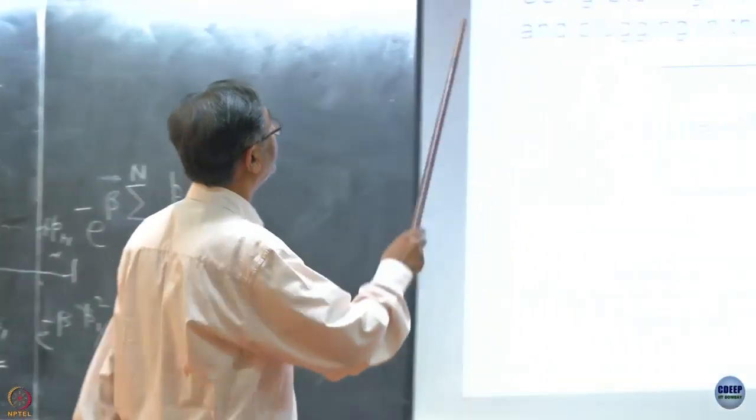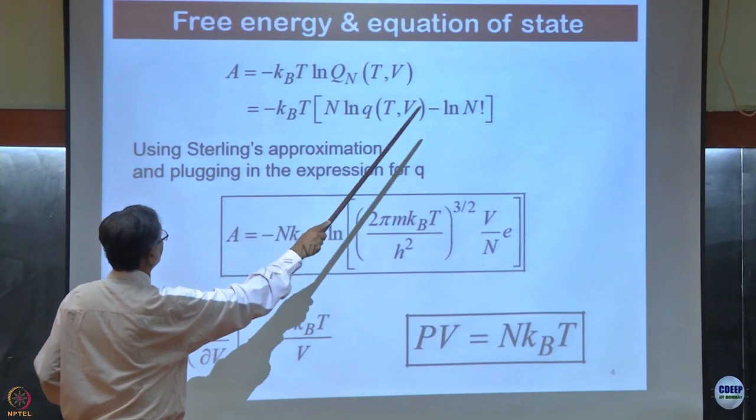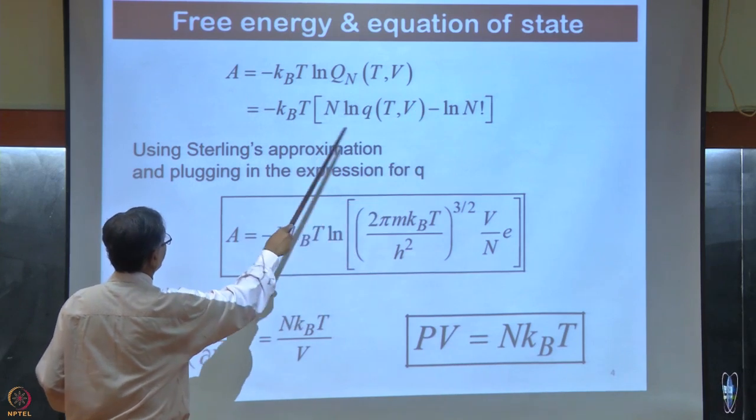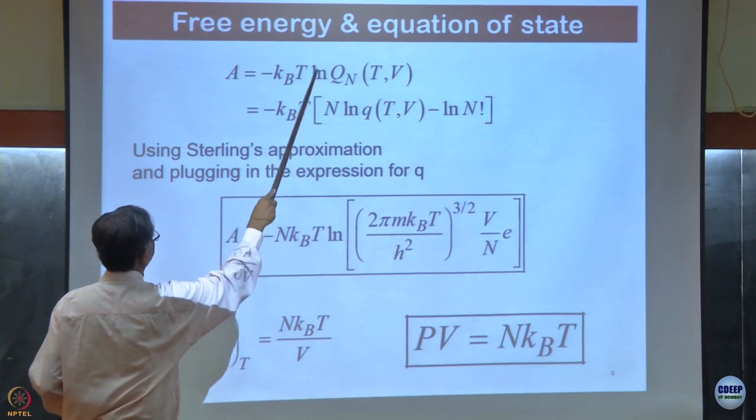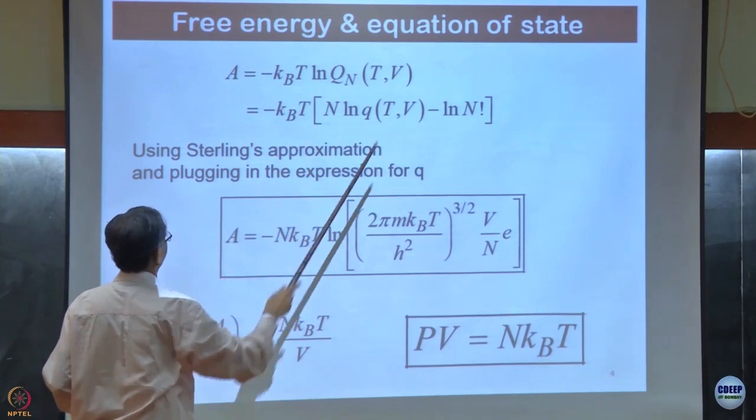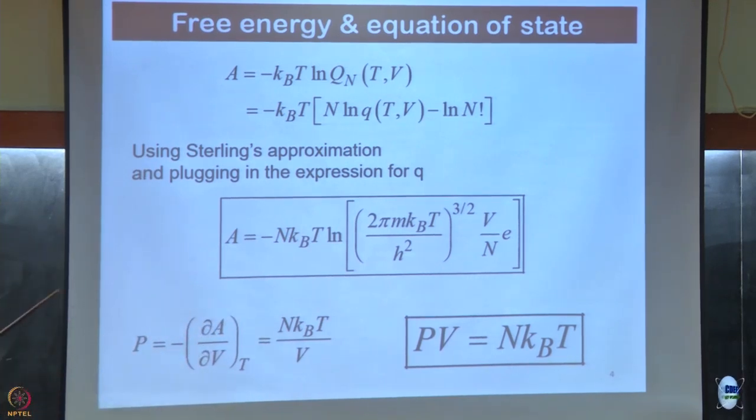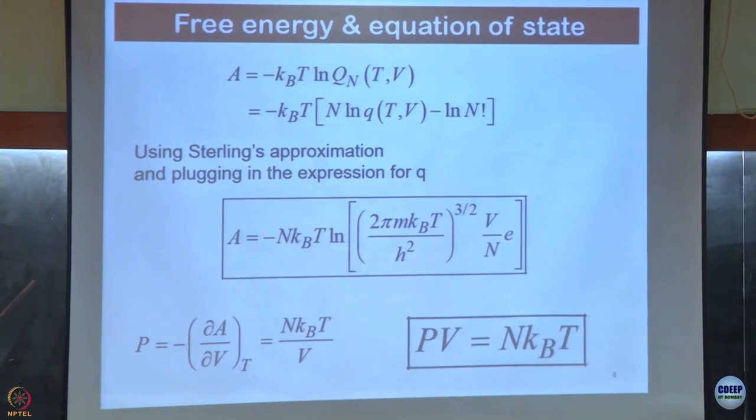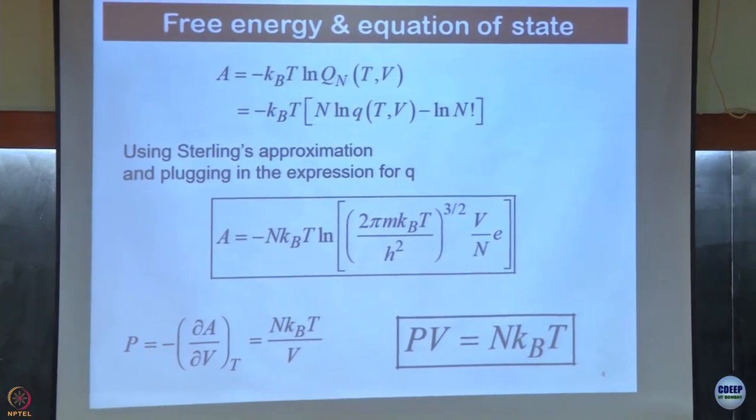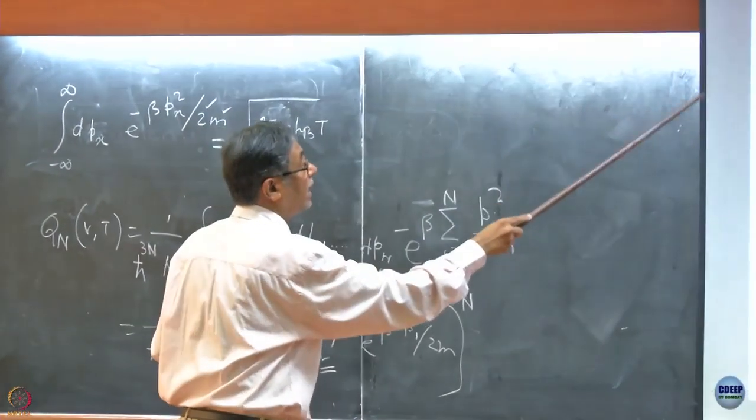Now, I have kBT ln q to the power n, which is n ln q, then because there's q to the power n and minus ln factorial. This n comes because there is an exponent here in q^n and this comes from n factorial. Then something is jumped here, but I hope you will be able to do that. I put now q to the power, this is my q.